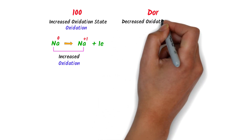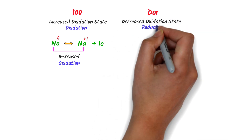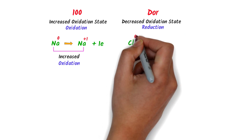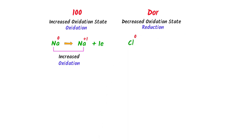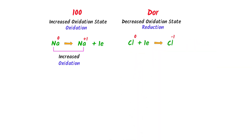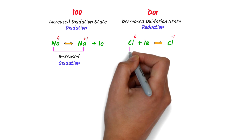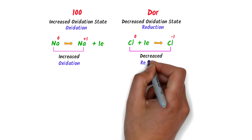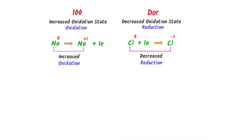So we say that sodium is oxidized. On the other hand, 'door' stands for 'decreased oxidation state is reduction.' For example, consider a chlorine atom. When chlorine gains one electron, it becomes a negative ion. The oxidation state of chlorine decreases from zero to negative one, so chlorine is reduced. Using the trick '100 door,' we can easily spot oxidation and reduction.